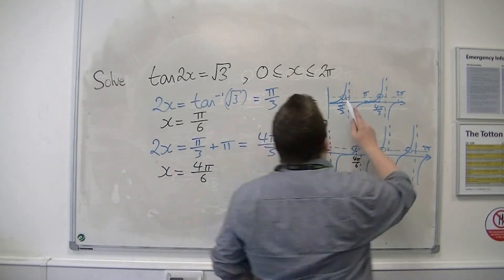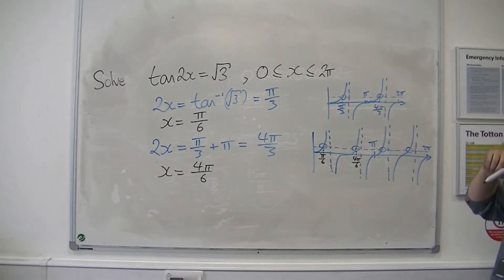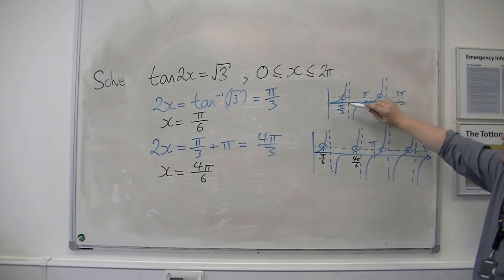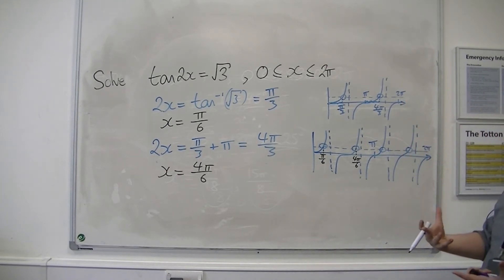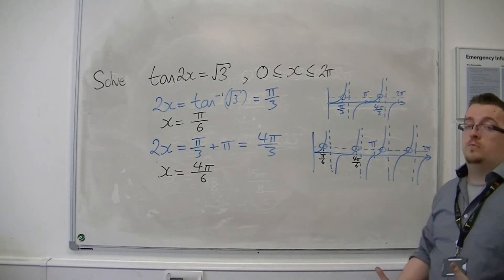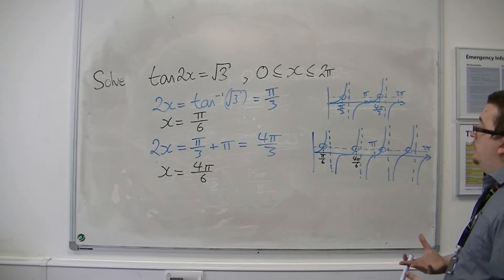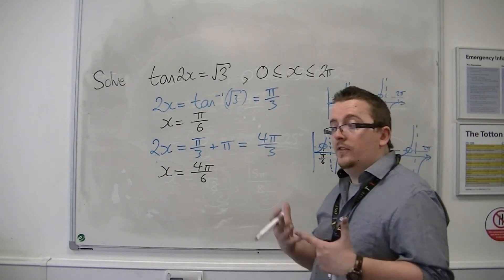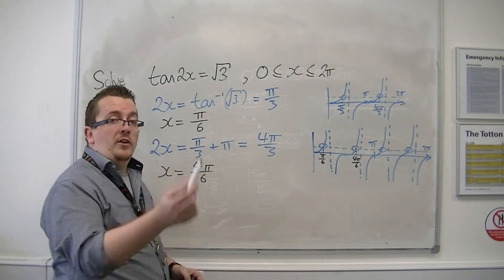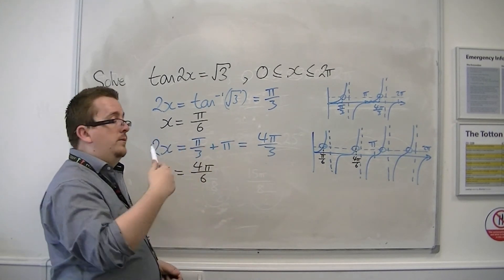Now, tan repeats itself over pi. So in actual fact, what we have here is that the curve, because the curve repeats itself over pi, it has a period of pi normally. So if I stretch in the x direction by a factor of a half, it now has a period of pi over 2. So what I can do is I can add pi over 2 to each of these solutions, because that is the period. Last time in the previous videos, when we were doing sine and cosine, we were adding pi, because the original period was 2 pi. The original period for this is pi, so we halve it, so pi over 2.